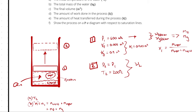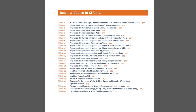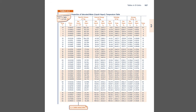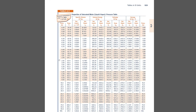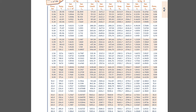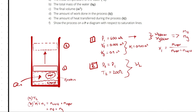We should treat this as a transient process, not steady state, because properties are changing with time. For example, the volume changes from state 1 to state 2 as temperature changes. T1 is the saturation temperature at 6 bar, which from our tables is 158.9 degrees Celsius. So we go from 158.9°C to 200°C — at least one property changes over time, confirming we must treat this as a transient process.